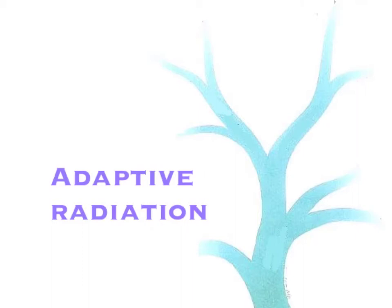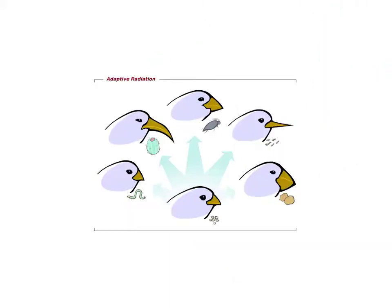In evolution, adaptive radiation is an idea of this relatively fast evolutionary divergence from a single common ancestor. They call it radiation because species radiates out from a common ancestor.